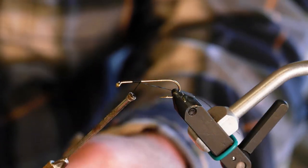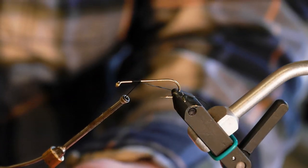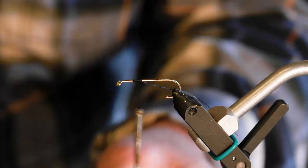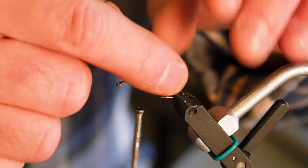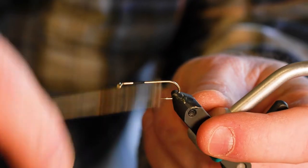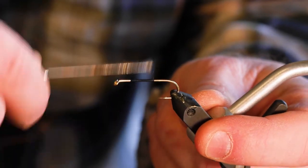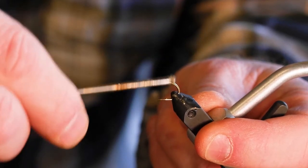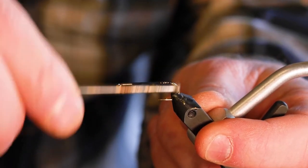The thread is black 210 denier Danville. You can also use the 140. I just happen to have the 210 laying there. I actually probably prefer the 140. It really doesn't matter. You just need a strong thread. I do not recommend gel spun because gel spun will actually cut the foam.